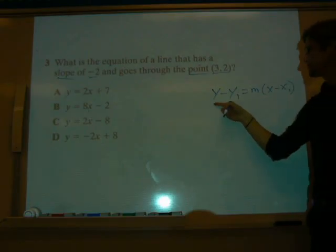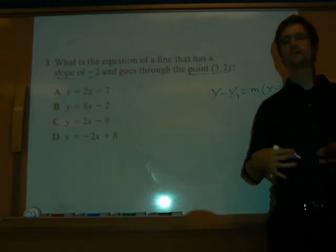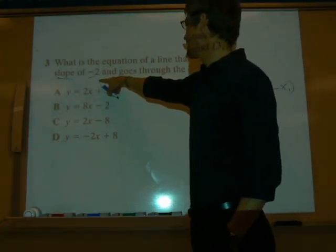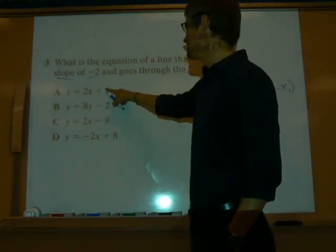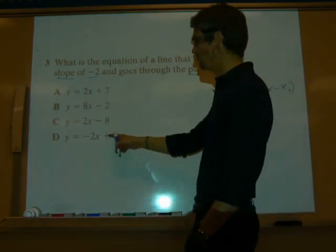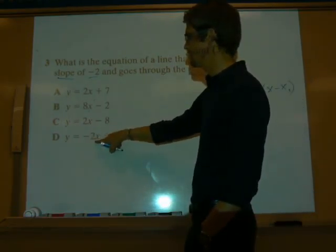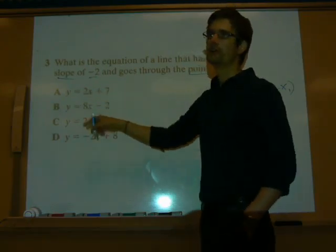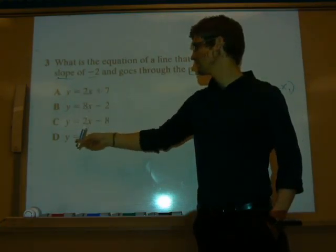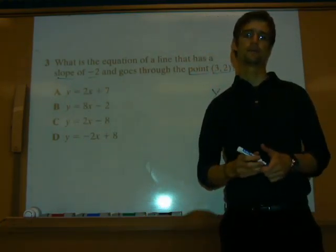This is one way to do it. So before I do it this way, which is the best way, let me show you the easy test trick. First of all, we know the slope is negative 2. How many of these have a slope of negative 2? Only the D. D is slope of negative 2. This is a slope of positive 2. So we automatically know, since it tells us the slope is negative 2, that our answer is D.